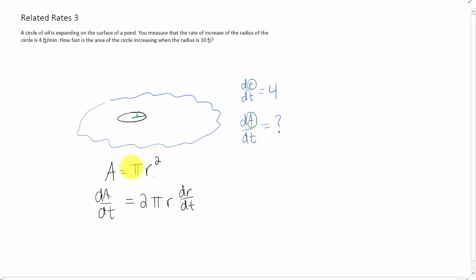So we use the power rule to bring the 2 down in front. We reduce the power on r to 1. And then the chain rule said that since we're taking a derivative with respect to t, we need to do an implicit derivative. Here we need to multiply by the derivative of the r with respect to time.